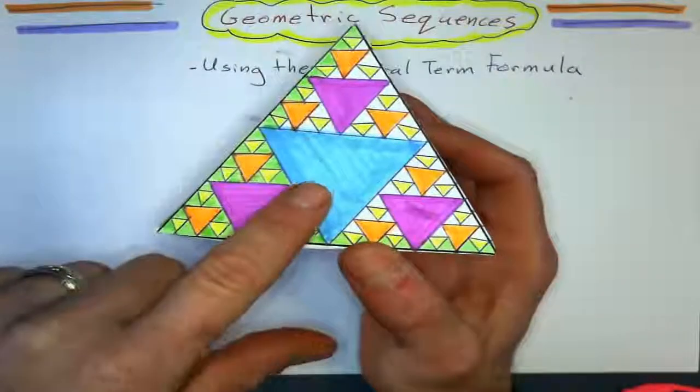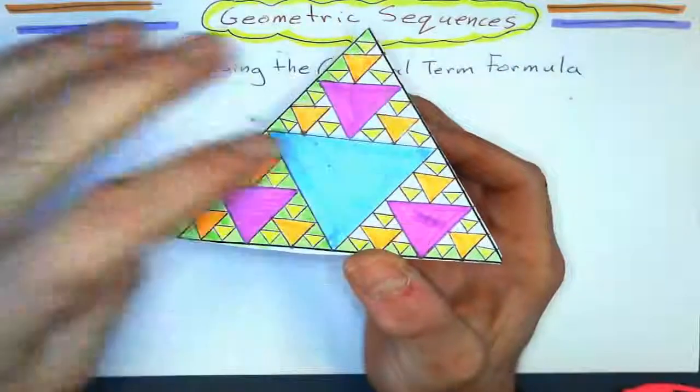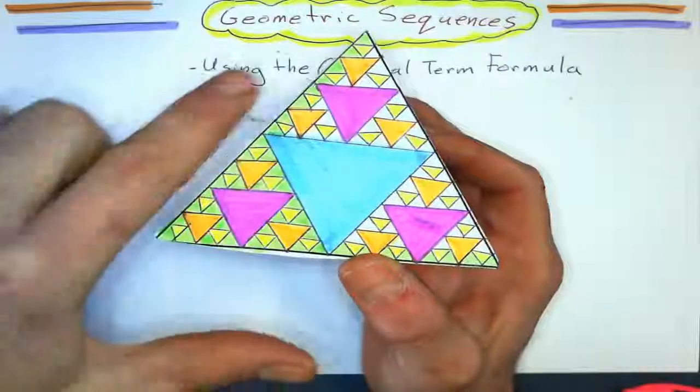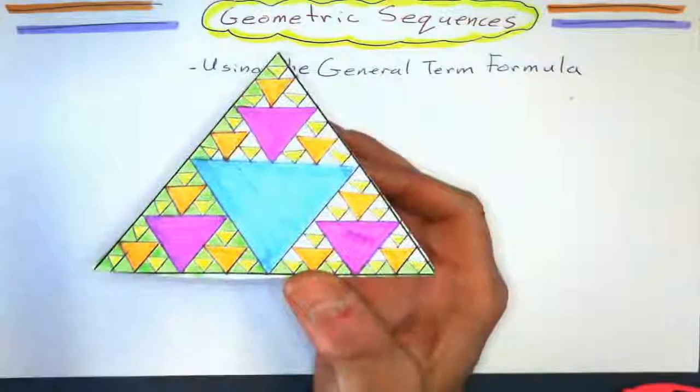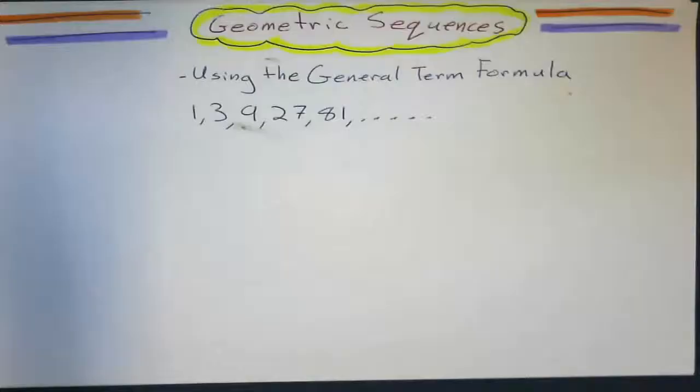So I've got one blue triangle, I've got three purple triangles, I've got nine orange triangles, which makes a geometric sequence if I kept going. So we can write that down.